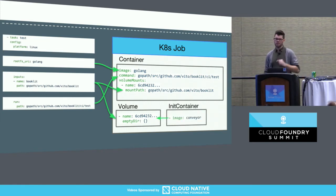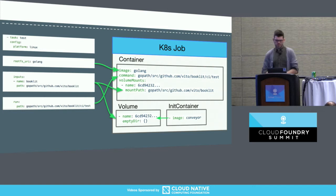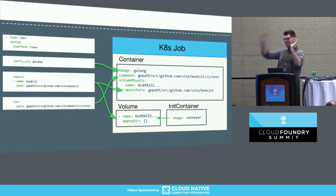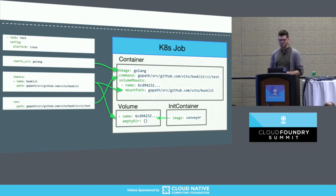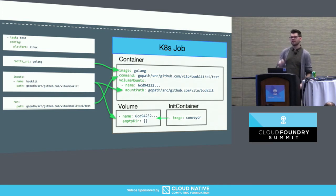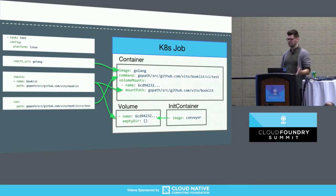Concourse inputs basically give a directory from a resource — just download all the bits of that resource and store it in a path inside the task container. So I know I want to mount some volume in there, give it a GUID, and track it inside my pod. The run path is just the command to run inside that container. But moving baggage claim volumes around with Kubernetes got a little weird because I had to worry about what node it's running on — I'm not as close to scheduling on a specific Garden host.